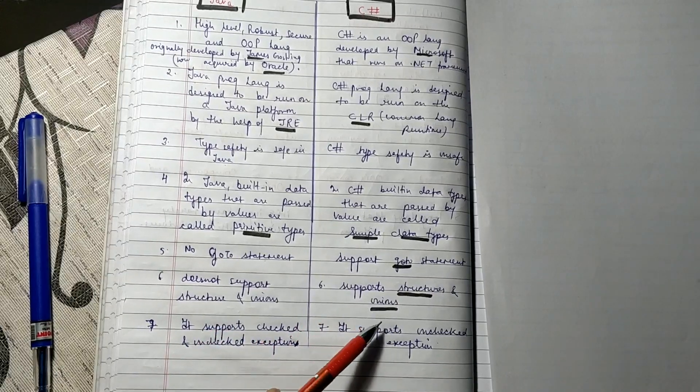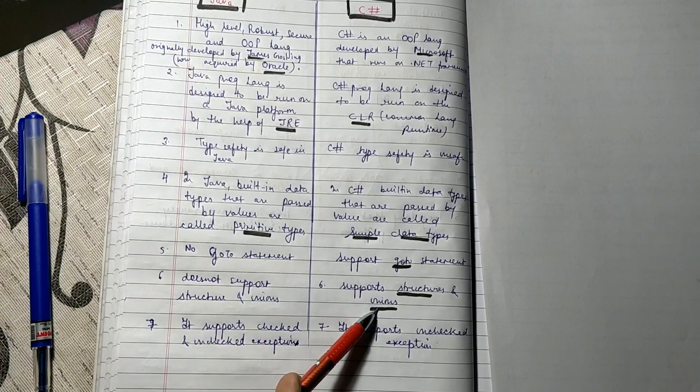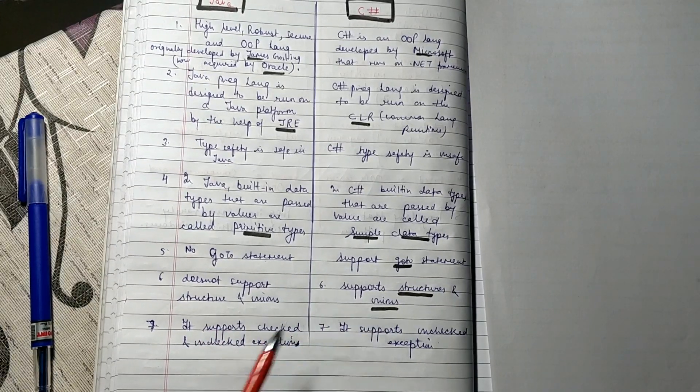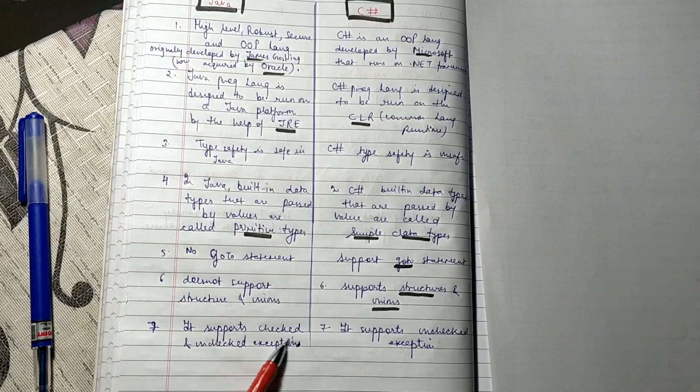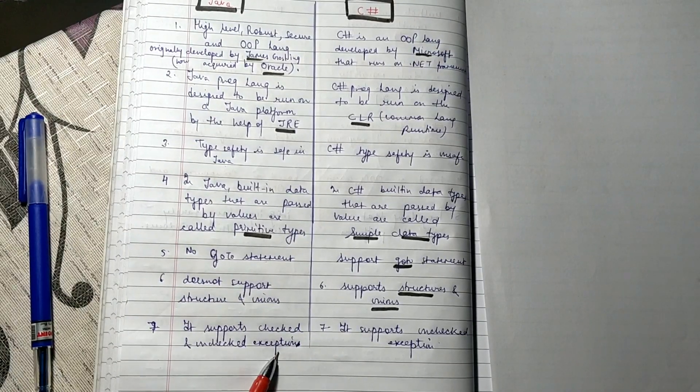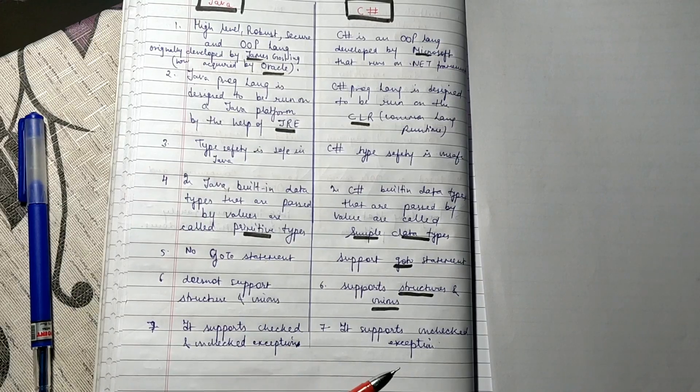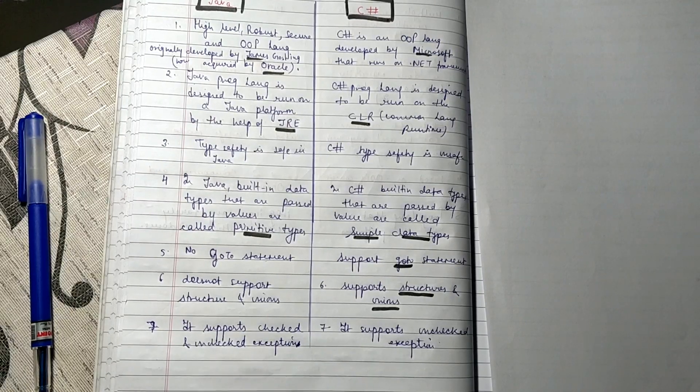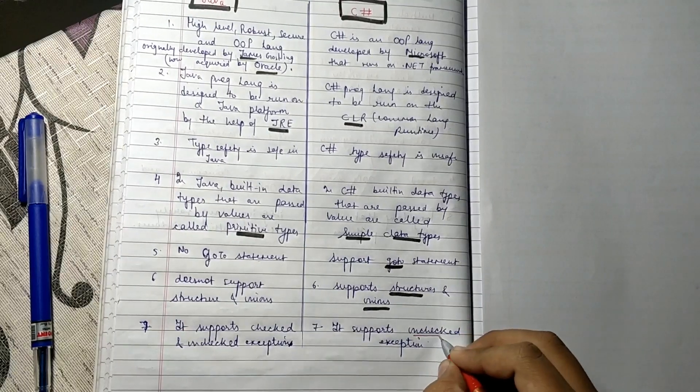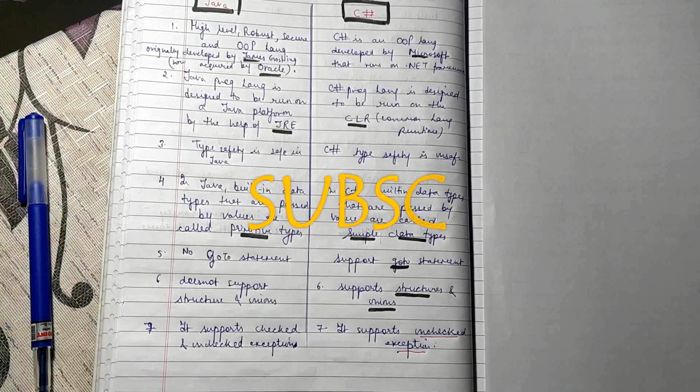Unions - in this one structural union is supported, in this one it's not supported. It supports checked and unchecked exceptions, but this one supports only unchecked exceptions.